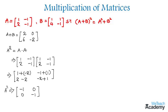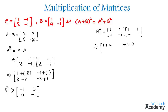Now let us find matrix B² by multiplying matrix B two times. We get one into one which is one, plus one into four which is four. With the second column: one into one plus one into minus one is zero. In the next row: four into one plus minus one into four is zero. The last element: four into one plus minus one into minus one is five. So the matrix B² is 5, 0, 0, 5.